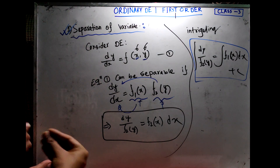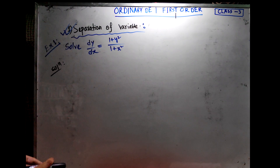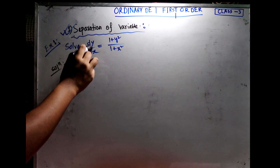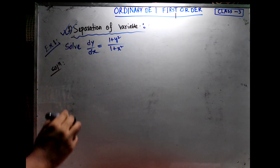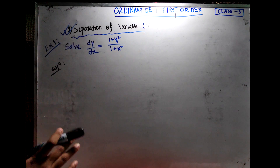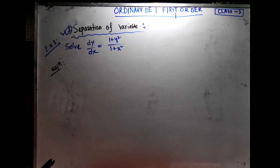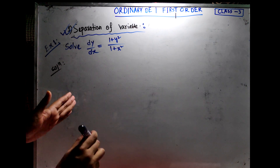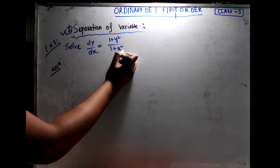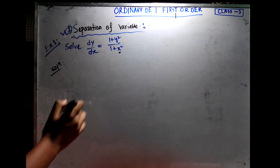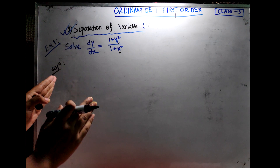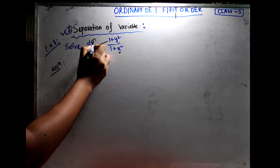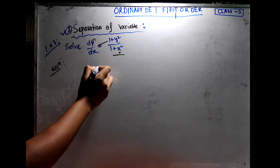We will start with Example 1. The question is: Solve dy/dx = (1 + y²) / (1 + x²). We will use the separation of variable method, separating the y-variable and x-variable terms.